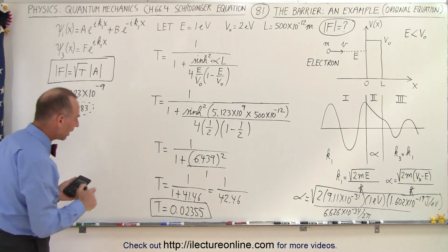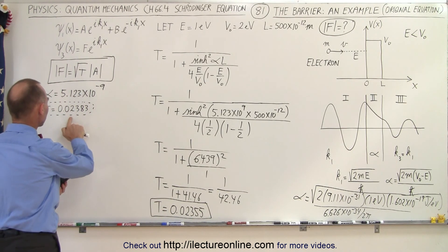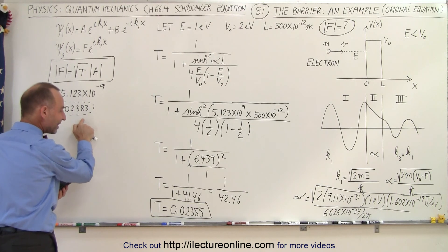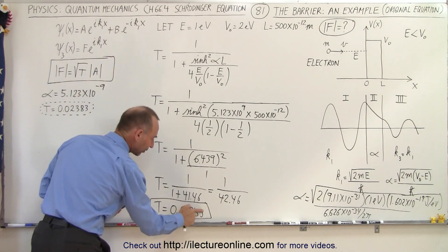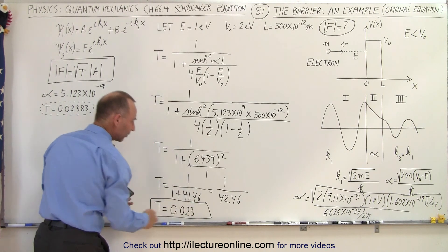And let's compare that to what we have over here: 0.02383, 0.02355. Not a very good 5 here, let me try that again so it's a little clearer.